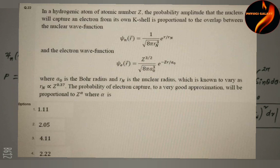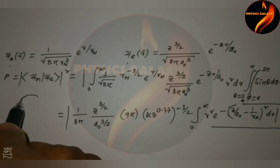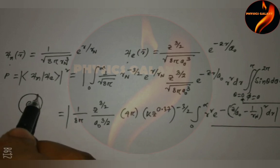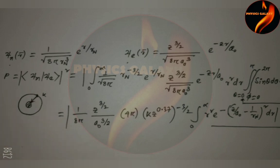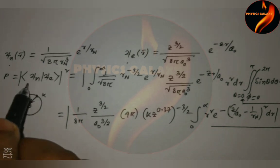The problem is the probability of electron capture to a very good approximation. So we know that for an atom, this is the nucleus and this is the electron orbit. We consider this is the K-shell, where the electron is captured from the electron by the nucleus. This is the required probability. That means the bra-ket notation |⟨ψn|ψe⟩|².